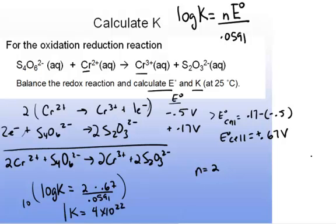That is a huge number, so this is very much a product favored reaction, which we would expect because there's a positive potential associated with this particular electrochemical cell.